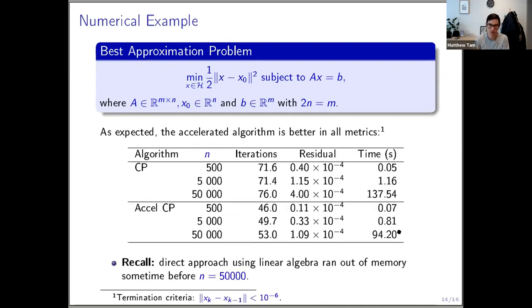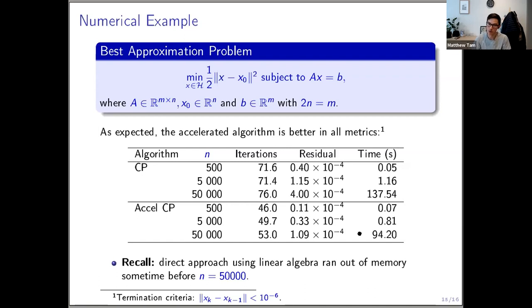Here are some numerical results for problem sizes from 500 to 50,000 — recall that 50,000 was where the direct linear algebra approach failed due to memory. The number of iterations is better in all cases for the accelerated method, the residual is comparable or slightly better, and most importantly the wall-clock time is significantly better, especially with increasing problem dimension. The trade-off between slightly higher per-iteration cost is offset by the reduction in iteration count, which is what we want to see. The termination criterion was consecutive iterates closer than 10^{-6}.